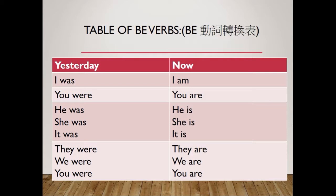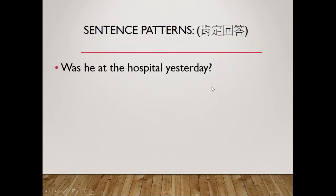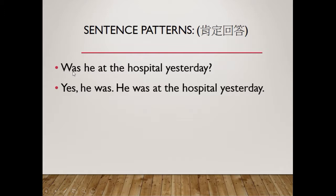Next, we're going to talk about using 'was' and 'were' in yes/no questions. For example: 'Was he at the hospital yesterday?' The answer will be: 'Yes, he was.' Notice that 'was he' becomes 'he was' in the answer. 'Was he at the hospital yesterday? Yes, he was. He was at the hospital yesterday.'